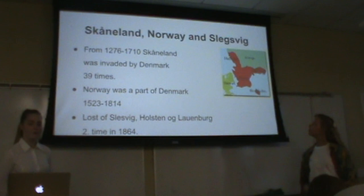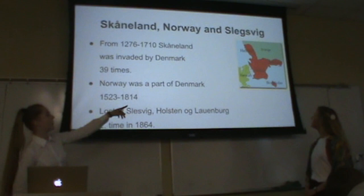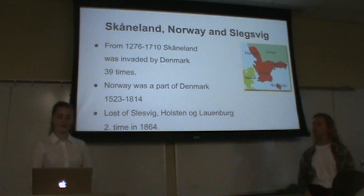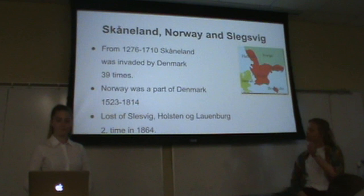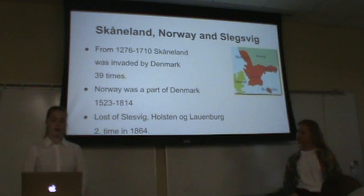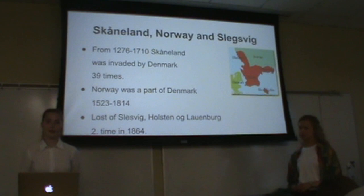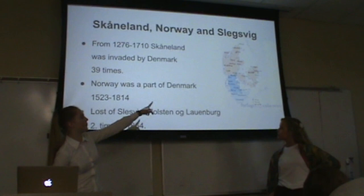We also had something called Scania, and we had Norway and Schleswig. Scania was a part of Denmark from 1267 to 1710, and was invaded by Denmark 39 times. Norway was a part of Denmark from 1523 to 1814. So Denmark at that time was really big. Then we lost Schleswig, Holstein, and Lauenburg — that's the blue part — for the second time in 1864.